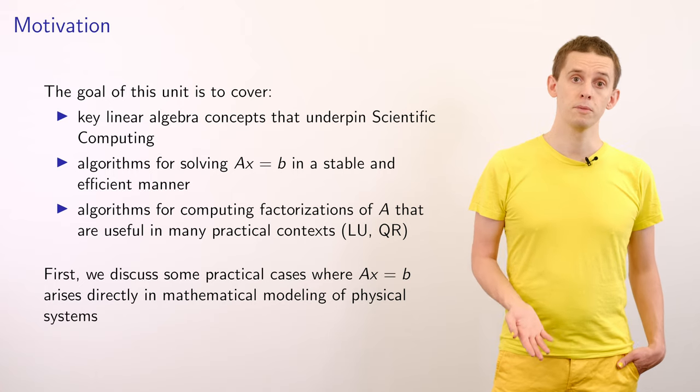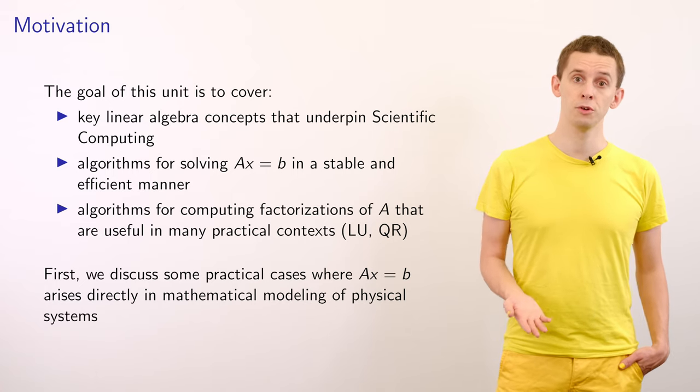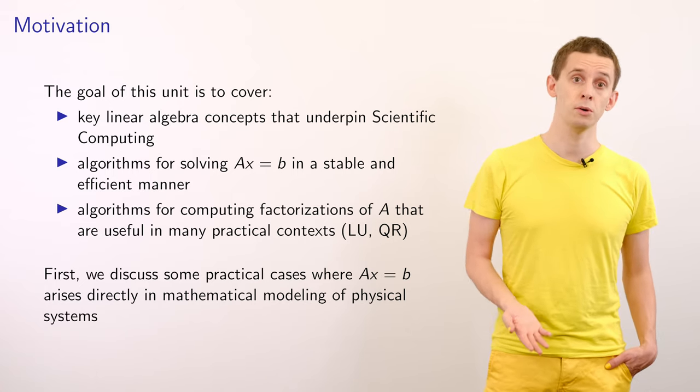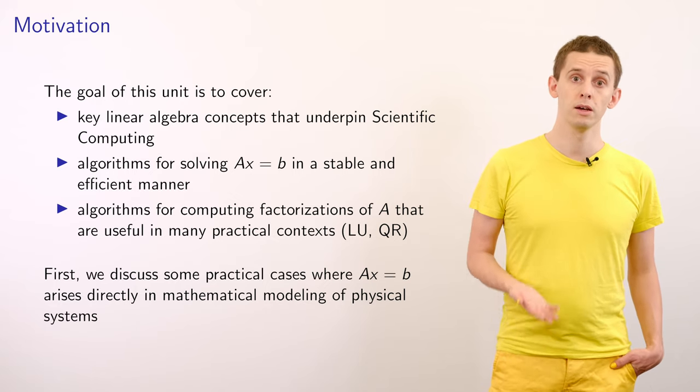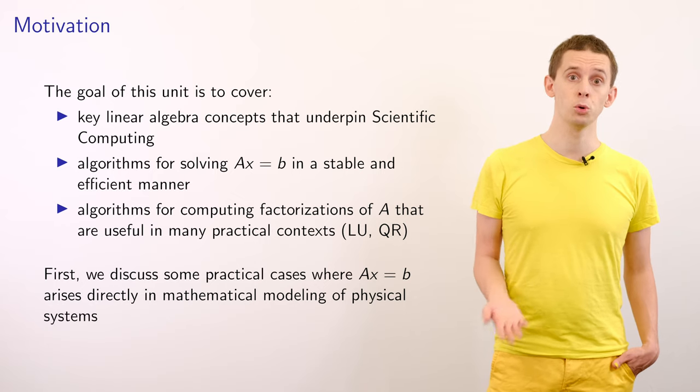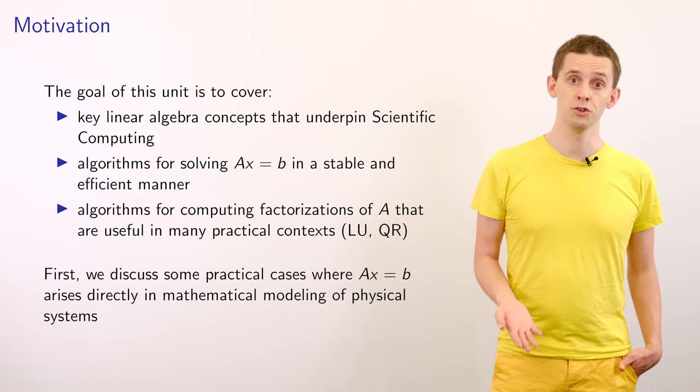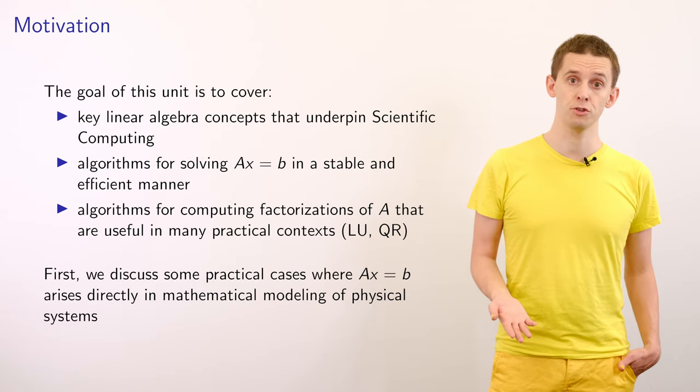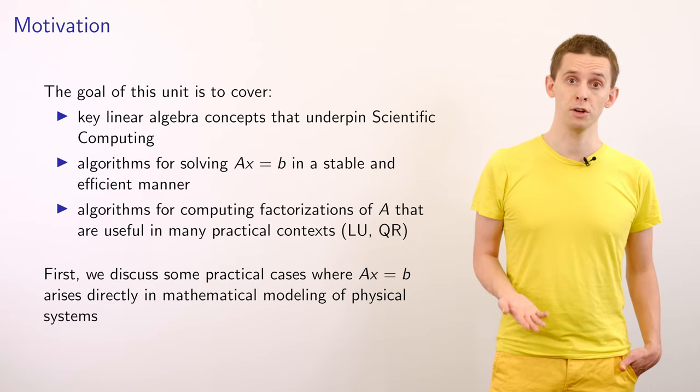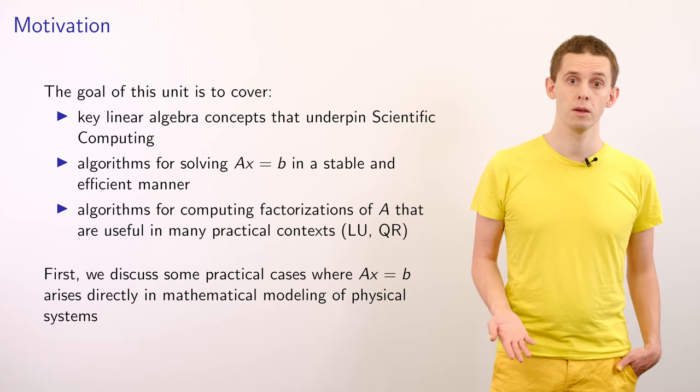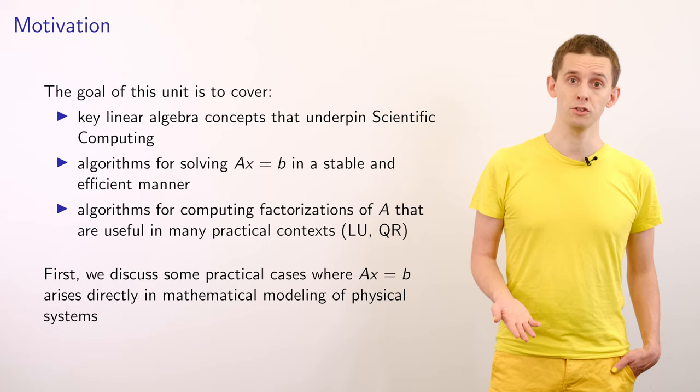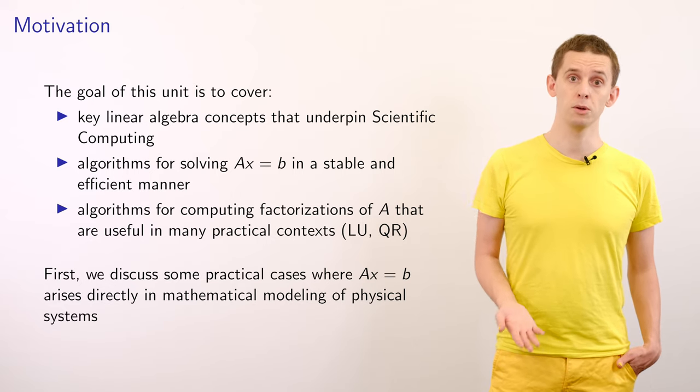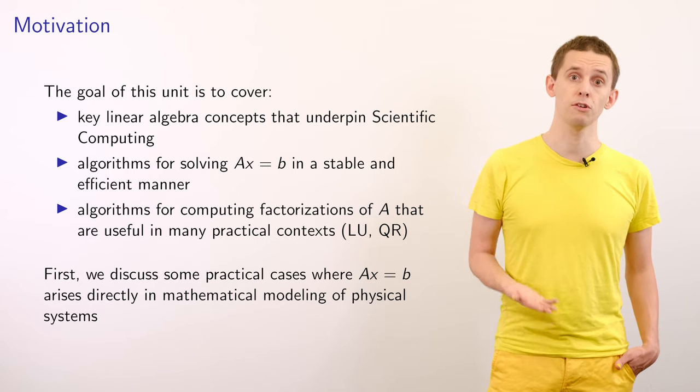So in this unit, our goals are to first review some of the key linear algebra concepts that arise in scientific computing. We'll then look at algorithms for solving matrix problems of the form Ax = b in a stable and efficient manner. And we'll also look at various useful factorizations of matrices, such as the LU factorization and the QR factorization. But to begin, let's take a look at a few practical situations where matrix systems naturally arise in the modelling of physical systems.